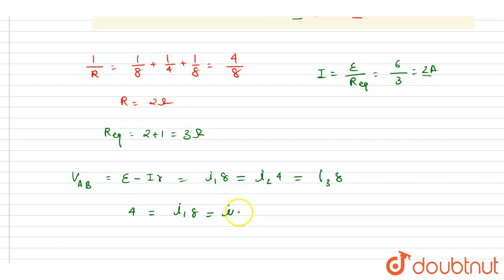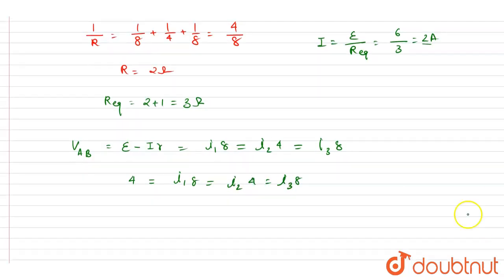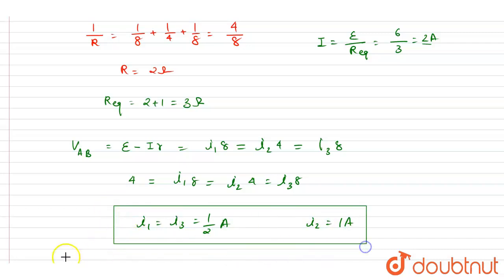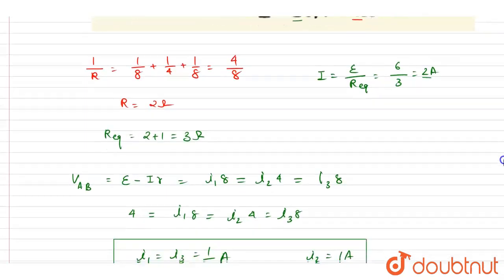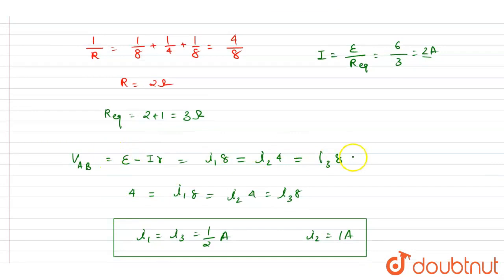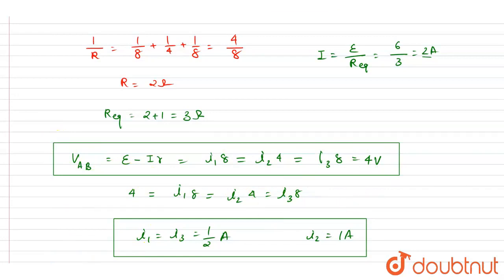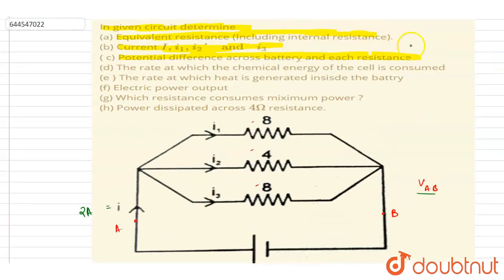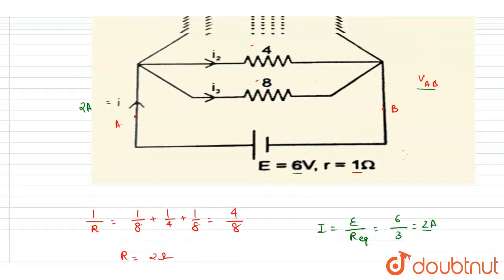From i2 × 4 = i3 × 8 and VAB = 4V, we can solve: i1 = 4/8 = 0.5 A, i3 = 4/8 = 0.5 A, and i2 = 4/4 = 1 A. So i1 equals i3 equals 0.5 ampere and i2 equals 1 ampere. The equivalent resistance is 3 ohms, as already established.